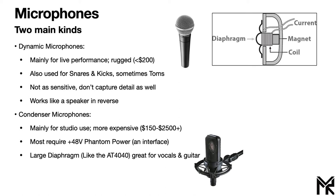Small diaphragm condenser microphones are great at capturing high frequency detail and are ideal for higher-pitched instruments like flutes and violins. Most of the time I'd recommend starting with a large diaphragm condenser microphone and getting a small diaphragm one once you know exactly what you're trying to record.